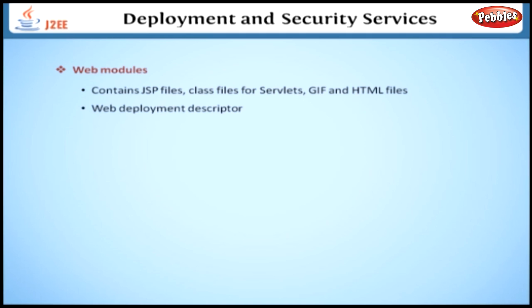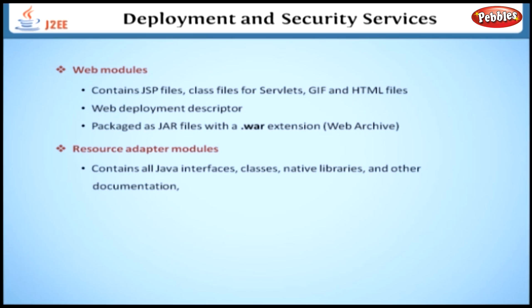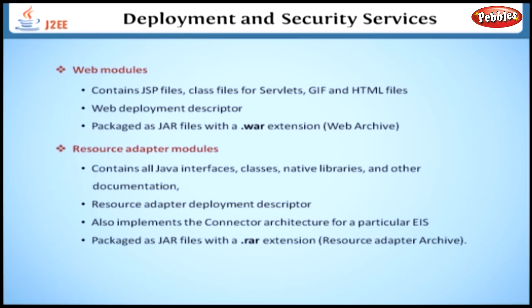With a web deployment descriptor, web modules are packaged as JAR files with a .WAR or WAR extension — Web Archive. Resource Adapter modules contain all Java interfaces, classes, native libraries and other documentation along with the Resource Adapter Deployment Descriptor. They also implement the connector architecture for a particular EIS. Resource Adapter modules are packaged as JAR files with a .RAR extension — Resource Adapter Archive.